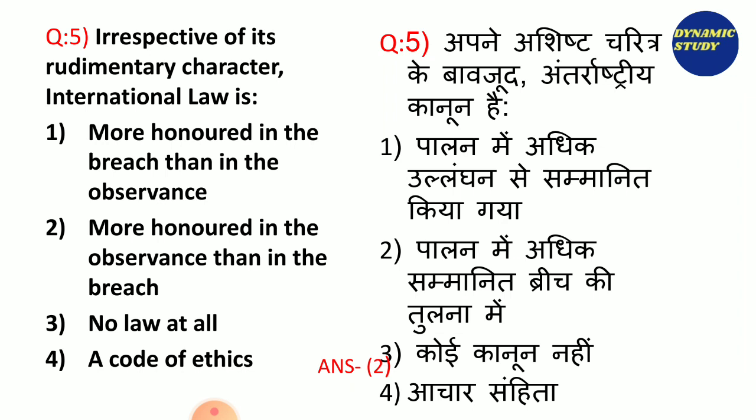Yeh bola gaya hai ki jo international law hai — breach hone se pehle hi jo bhi policies, laws, covenants bana jate hain, tab iska zyada honor kiya jata hai. Breach hone ke baad thoda issue aata hai kyunki har country ka apna stand hoga. When it happens, it will be easier to follow all of them. That's why there are so many signatures, policies, and member countries. UN is one of the biggest examples of that.